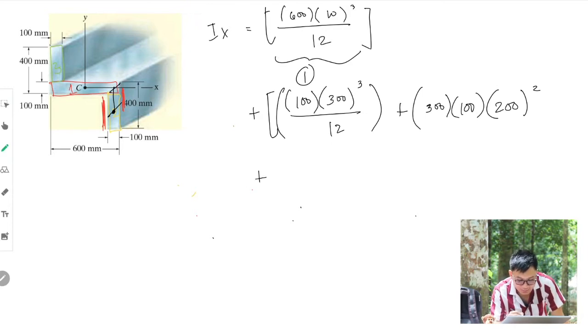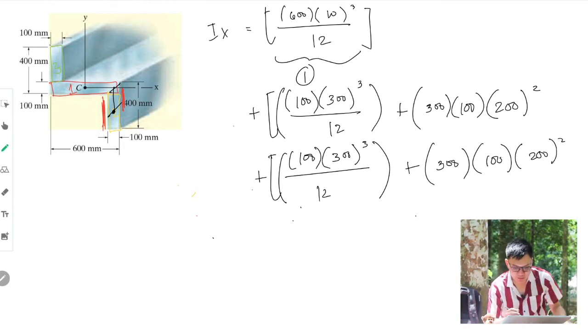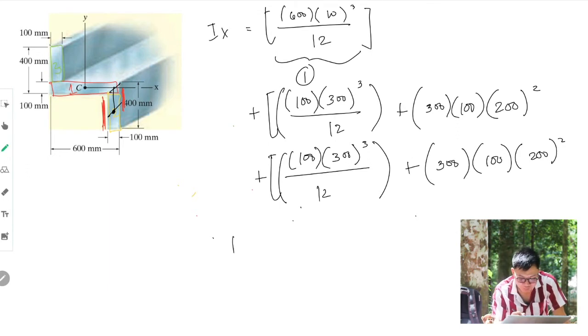Last area, which is basically symmetric, so we could multiply by two, but let's do it. That is 100 base times 300 cubed over 12, plus 300 times 100 times 200 squared. So Ix is 2.9 times 10 to the 9 millimeters to the fourth power.